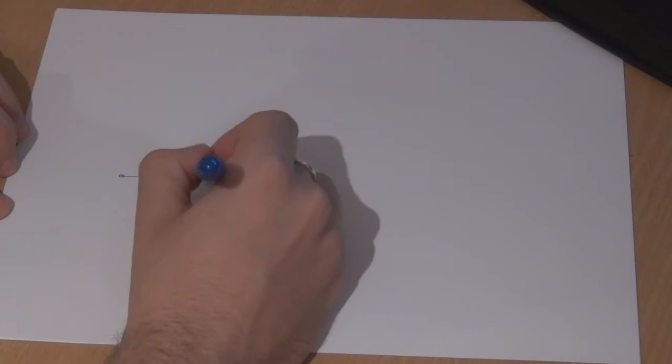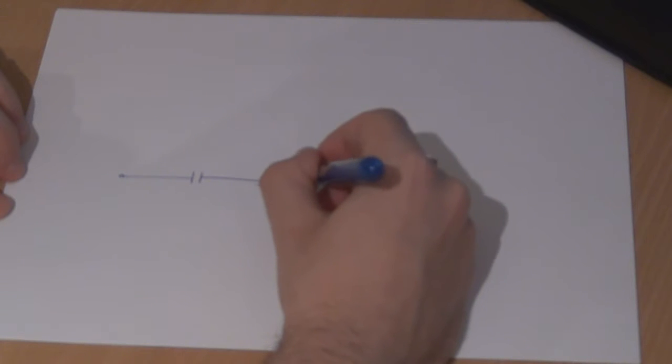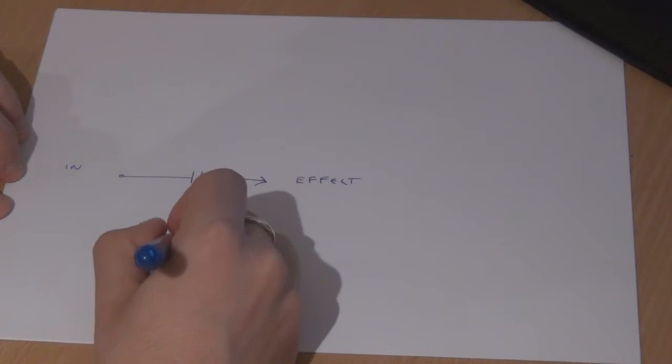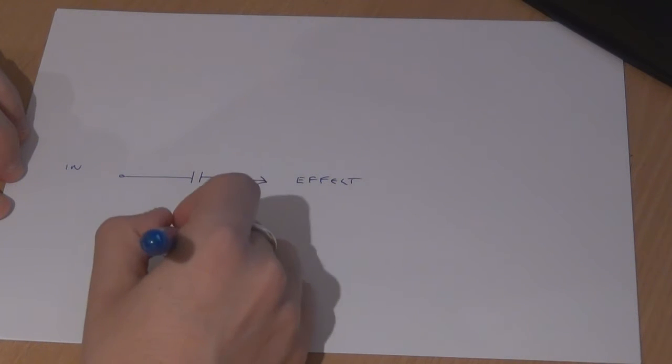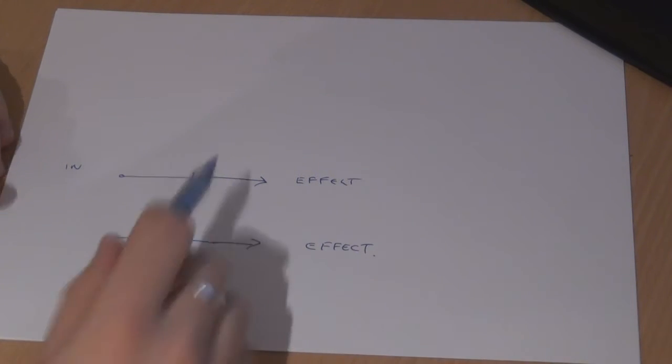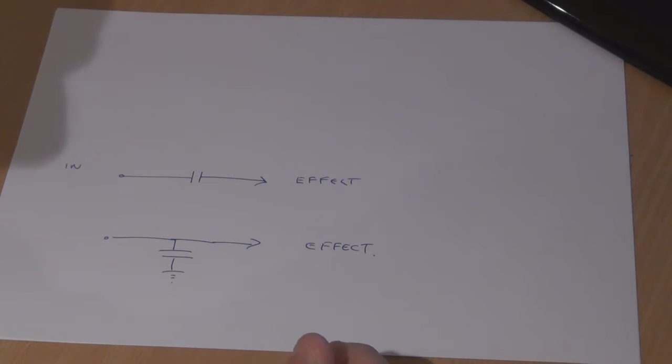The first thing we should probably look at is how a capacitor works in a circuit — I touched on this in the power filtering video. Basically, if you look at the front of the circuit, you've got your guitar signal, and you can set this capacitor up to be in series with the circuit so that your signal passes through the capacitor and continues on to the effect.